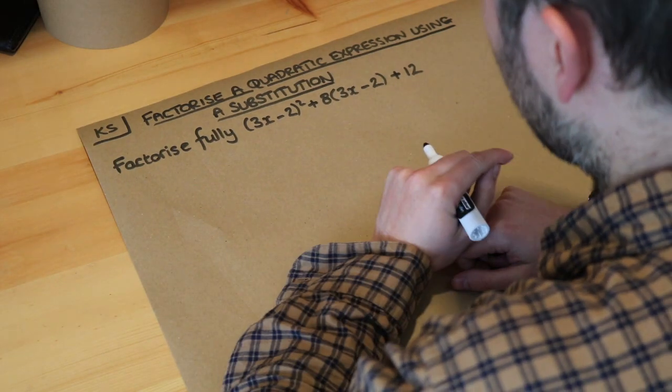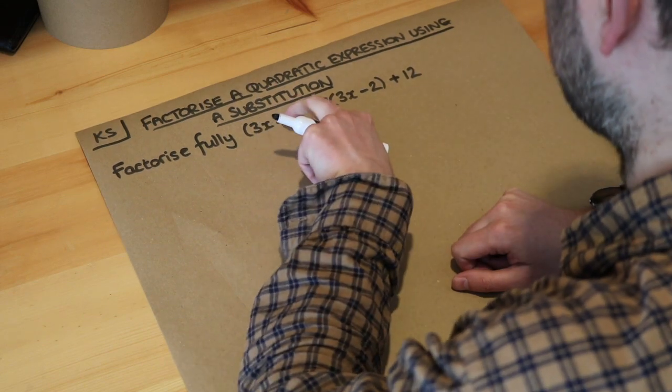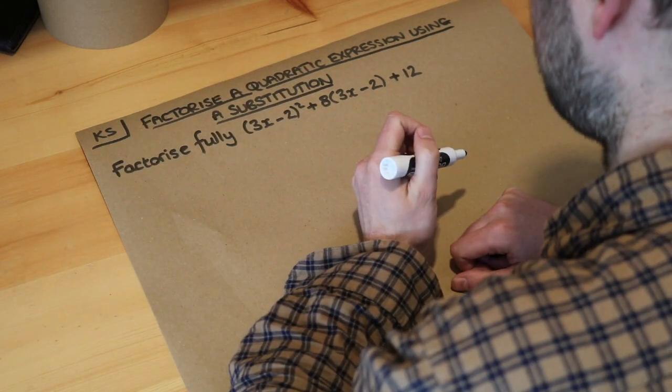If you stare at it a bit it kind of looks a bit like a quadratic. It's something squared plus eight something, that same something, plus 12. That feels a bit quadratic-y.